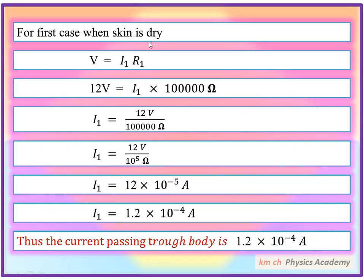For first case when skin is dry, V equals I1 R1. 12V equals I1 times 100,000 ohms. Since we need to find I1, we move the resistance to the other side. This becomes 10 to the power 5. When it goes up, 10 to the power 5 becomes 10 to the power minus 5.